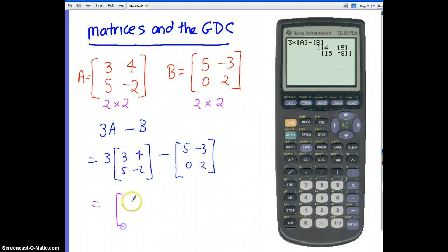We've got 4, 15, 15, -8. Okay, let's just do a quick check to see if that's actually right. If we do 3 times matrix A, what have we got? 3 times 3 is 9, 3 times 4 is 12, 3 times 5 is 15, 3 times -2 is -6. If we subtract those: 9 take away 5 is 4, 12 take away -3 is 12 plus 3 which is 15, 15 take away 0 is 15, and -6 take away 2 is -8. So as you can see, we've got that there.